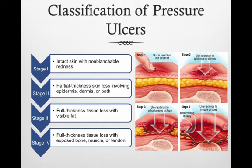Classification for pressure ulcers includes: Stage 1, intact skin with non-blanchable redness; Stage 2, partial thickness skin loss involving the epidermis and dermis; Stage 3, full thickness skin loss with visible fat in the subcutaneous skin layer; Stage 4, full thickness tissue loss with exposed bone, muscle, or tendon.